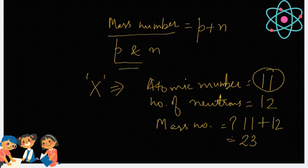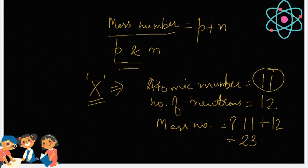The X element was sodium. It has atomic number as 11 and mass number as 23. So, this is the basic difference between atomic number and mass number. Now, in our next class, we will be discussing examples and questions related to atomic and mass number in detail.